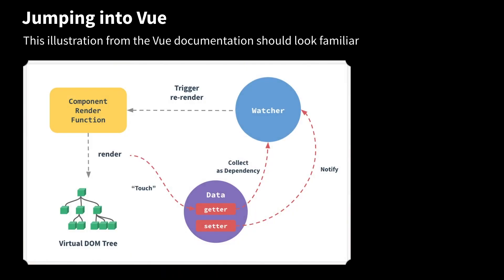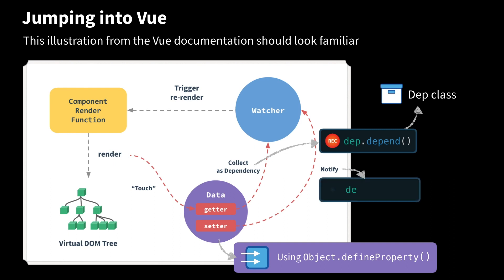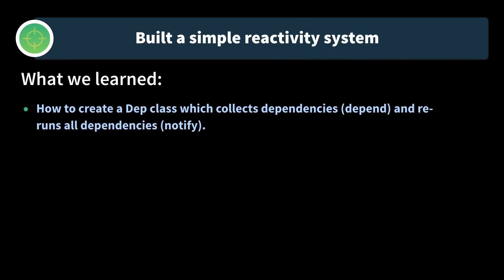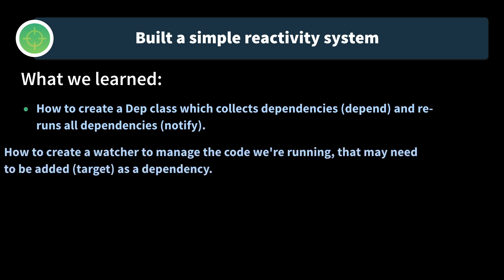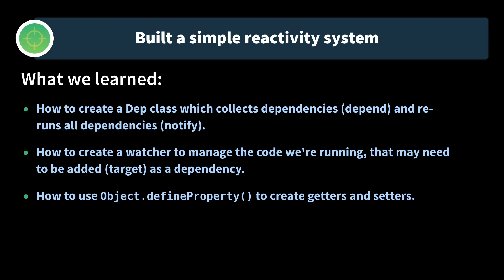Let's start thinking about how this might be implemented in Vue by jumping into this illustration. As you can see, we have data getters and setters — that's using Object.defineProperty. When get is run on a reactive property, we collect it as a dependency and call dep.depend on our Dep class. And when our property is set, we call dep.notify also on our Dep class. Notice Vue also has a watcher — it's much more complex than the watcher we wrote, and we'll get there in future lessons. To review: in this lesson we built a simple reactivity system. We learned how to create a Dep class which collects dependencies and reruns all dependencies. We learned how to create a watcher to manage the code we're running that may need to be added as a dependency. And we learned how to use Object.defineProperty to create getters and setters.